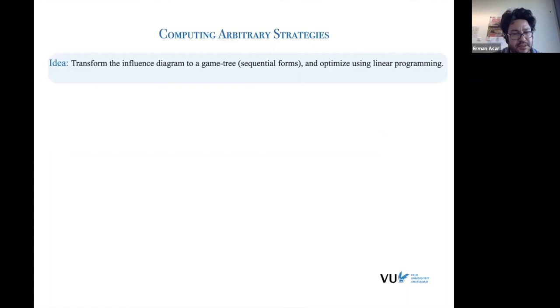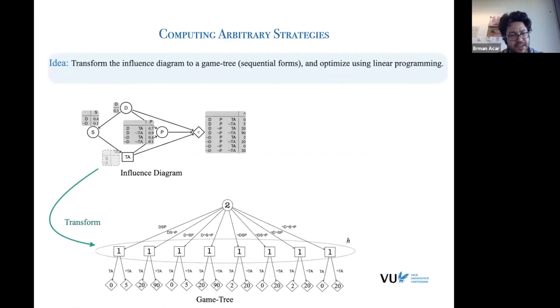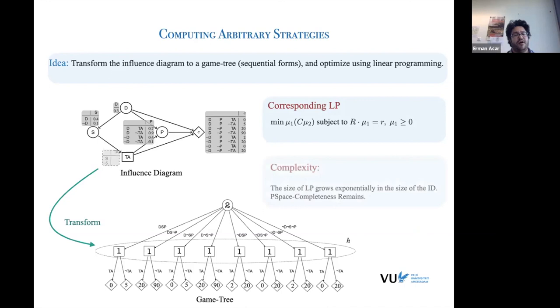And for the arbitrary case, I'm just in the last slide. So just for the arbitrary case, we borrow an idea from game theory, using sequential forms and transform this influence diagram, capturing the behavior faithfully to a game tree with two players. That would be the player, the nature, the Bayesian nodes, and the one would be the decision making agents. And corresponding LP is linear, of course, in the size of the game tree, but the game tree is exponential in the size of the influence diagram. The hardness would still stay there.